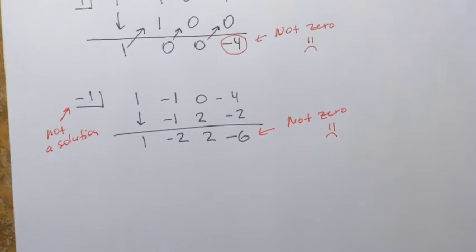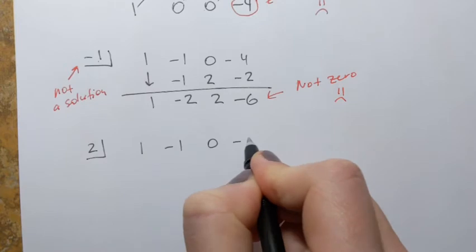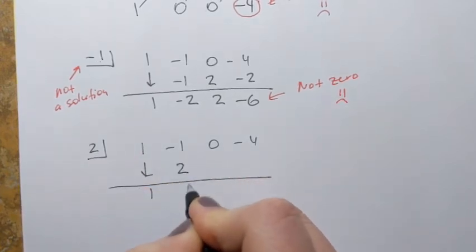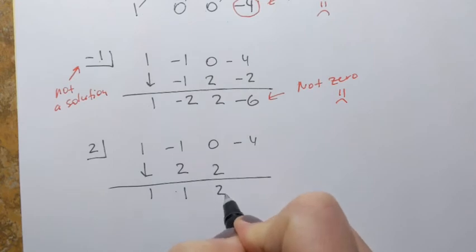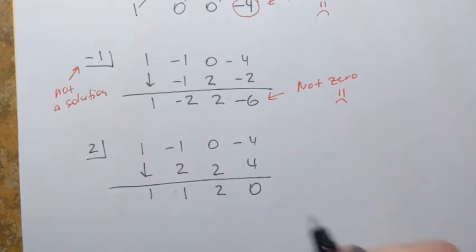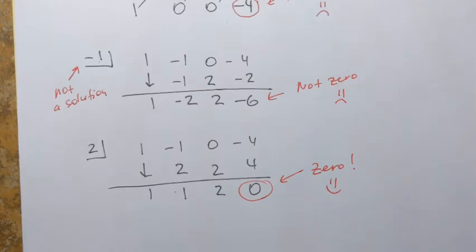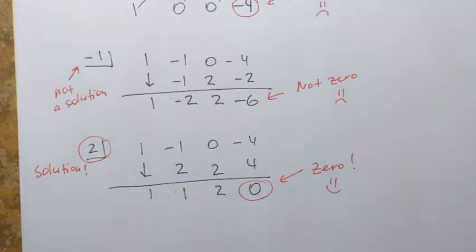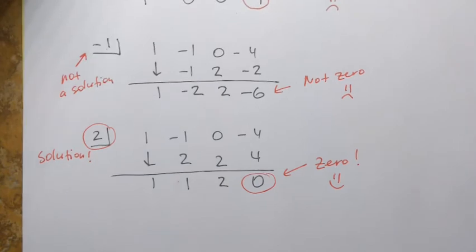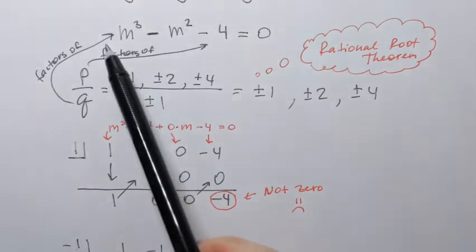Let's move on to the next number. It is time-consuming and somewhat tedious, but it's not a hard process. We test 2. Coefficients: 1, negative 1, 0, negative 4. Bring down 1. 1 times 2 is 2; add to get positive 1. 2 times 1 is 2; add to get 2. 2 times 2 is 4; add to get 0. The remainder is 0, so m = 2 is a solution — we found it. That's a root of this polynomial equation.